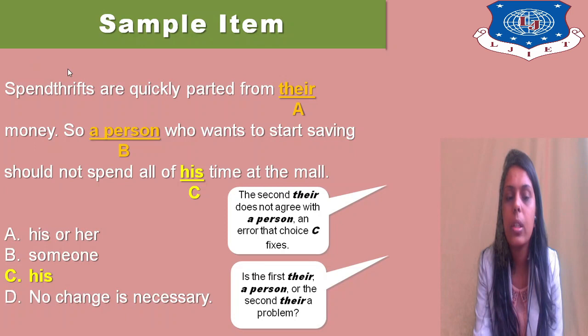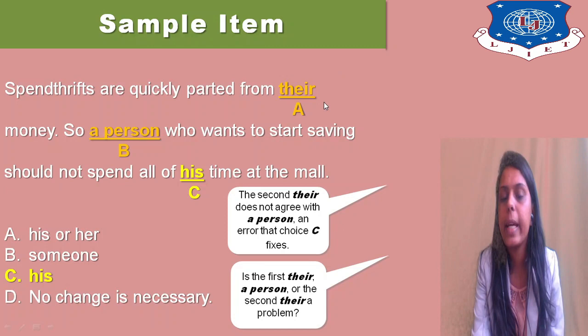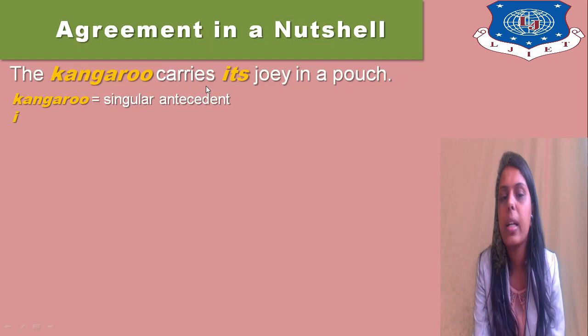The rule is that the pronoun should agree with the subject or the antecedent of the sentence. Here, 'a person' is singular, so the pronoun utilized is also singular — 'his.' 'Spendthrifts' was a plural thing, so the pronoun utilized was plural — 'their.' When we use 'a person,' the pronoun utilized is singular. That is agreement in a nutshell.